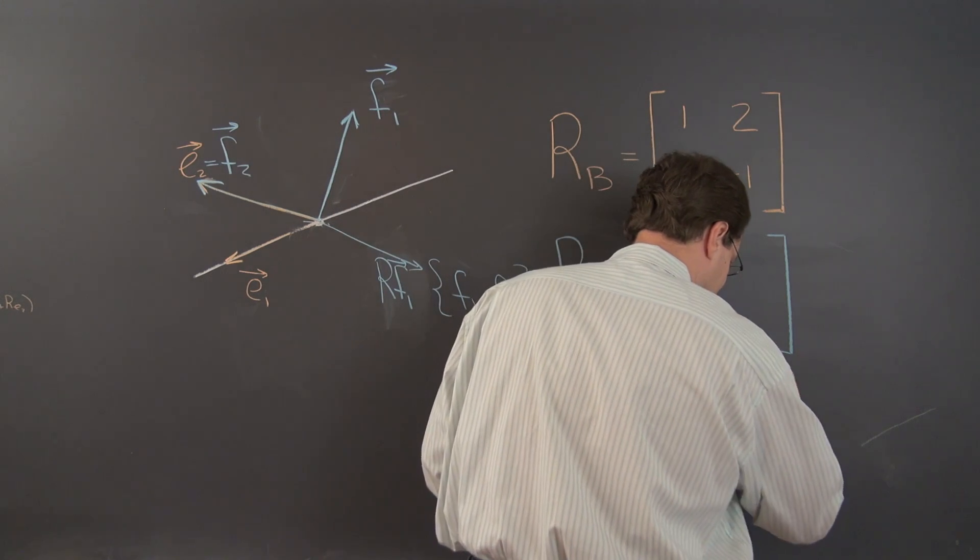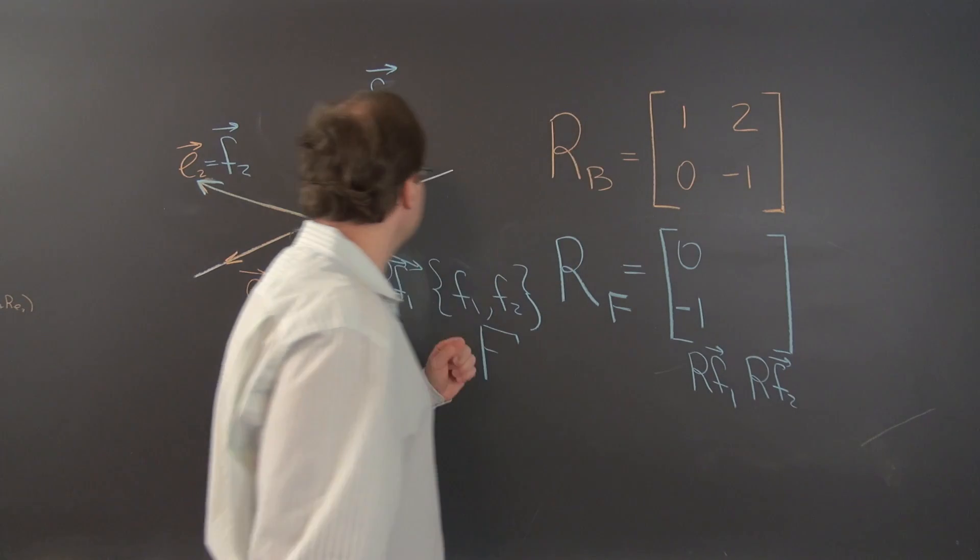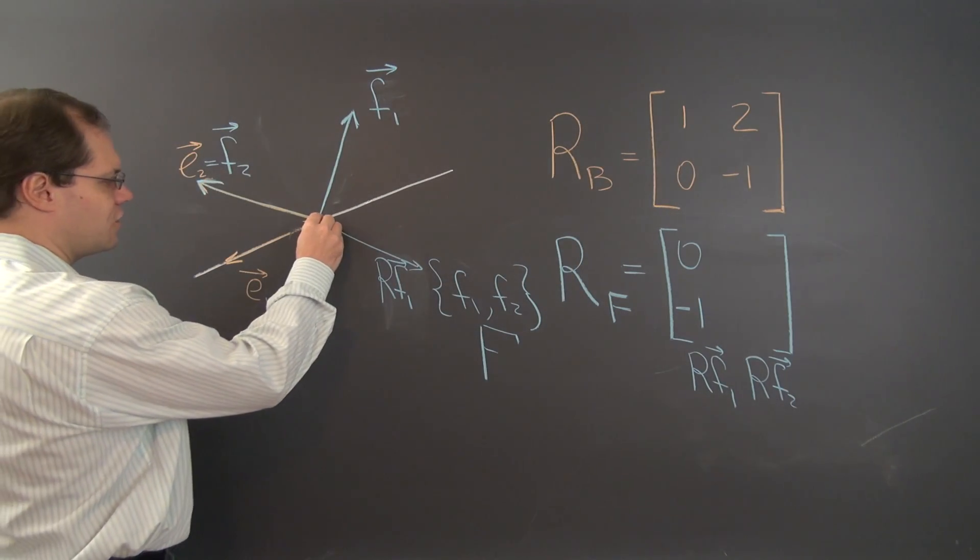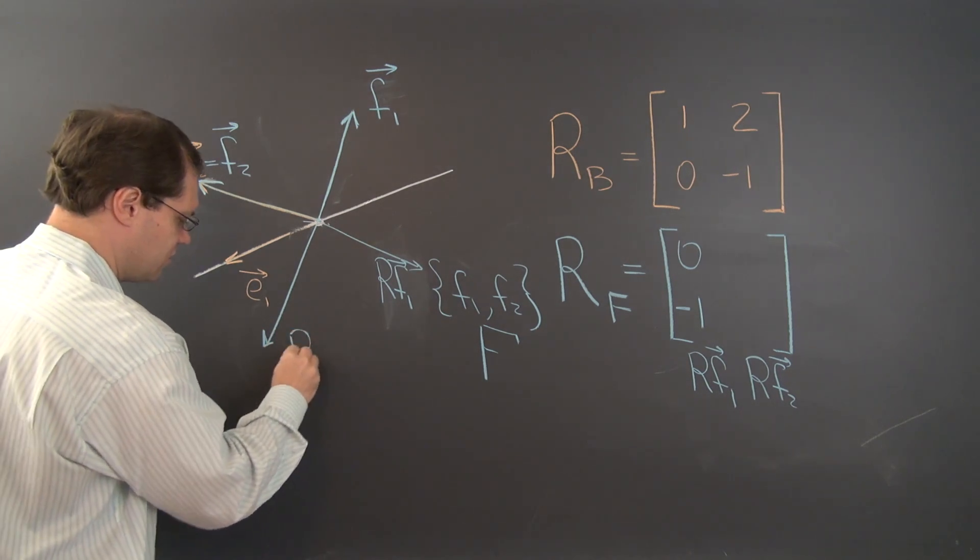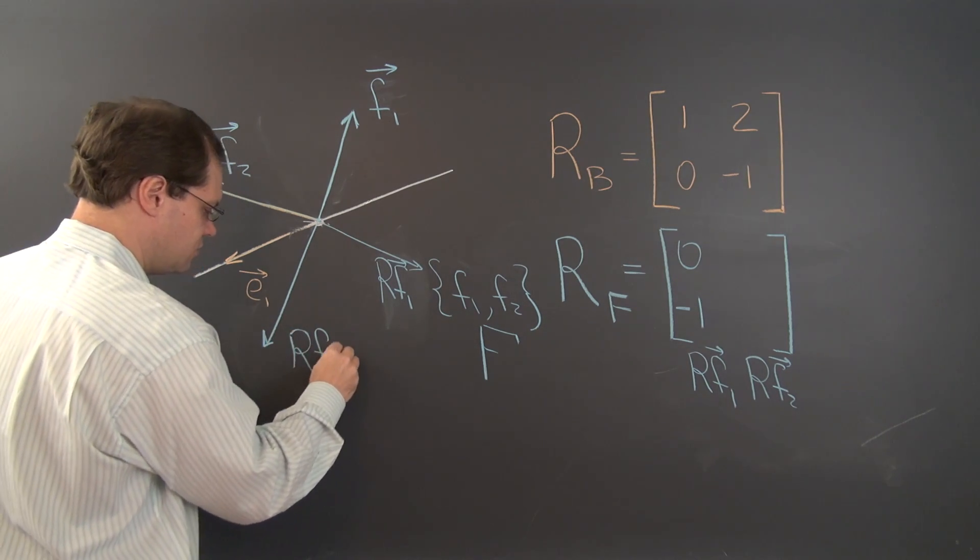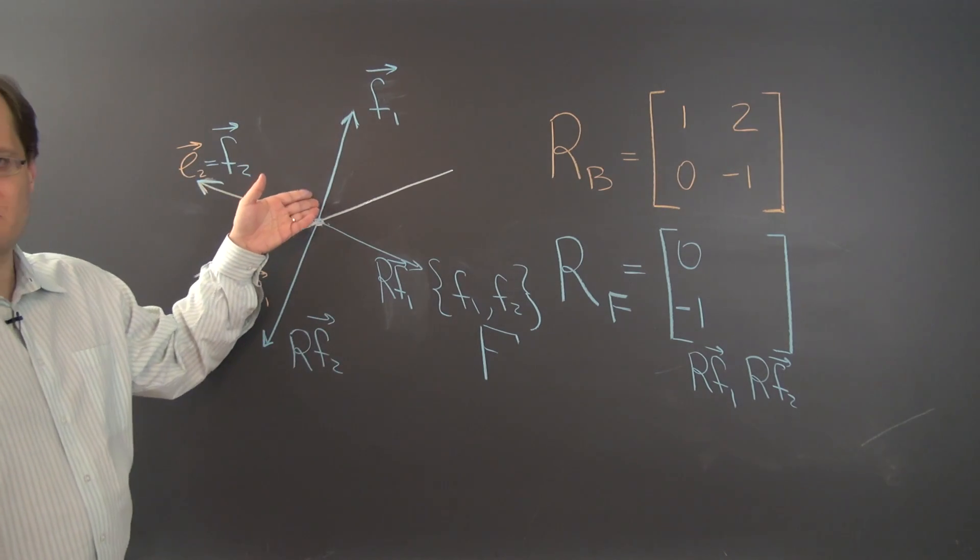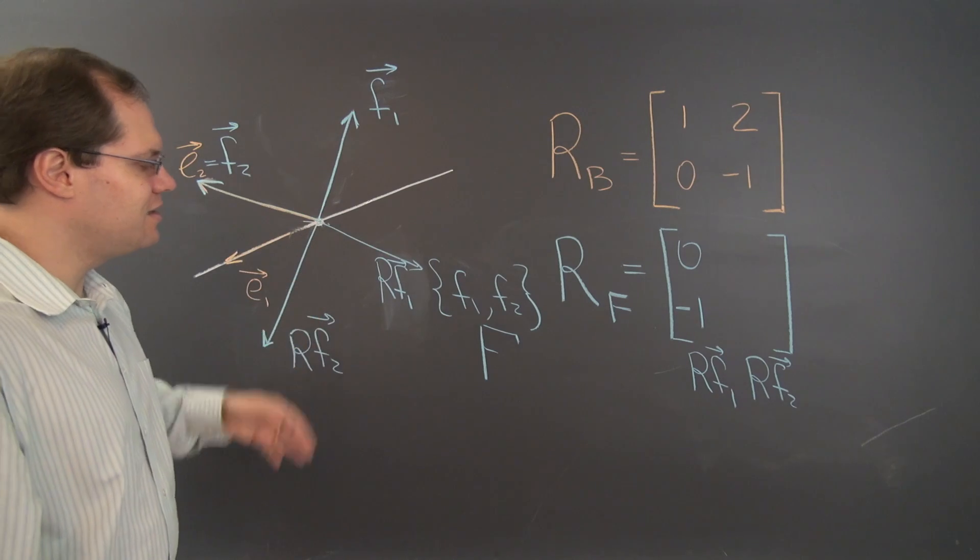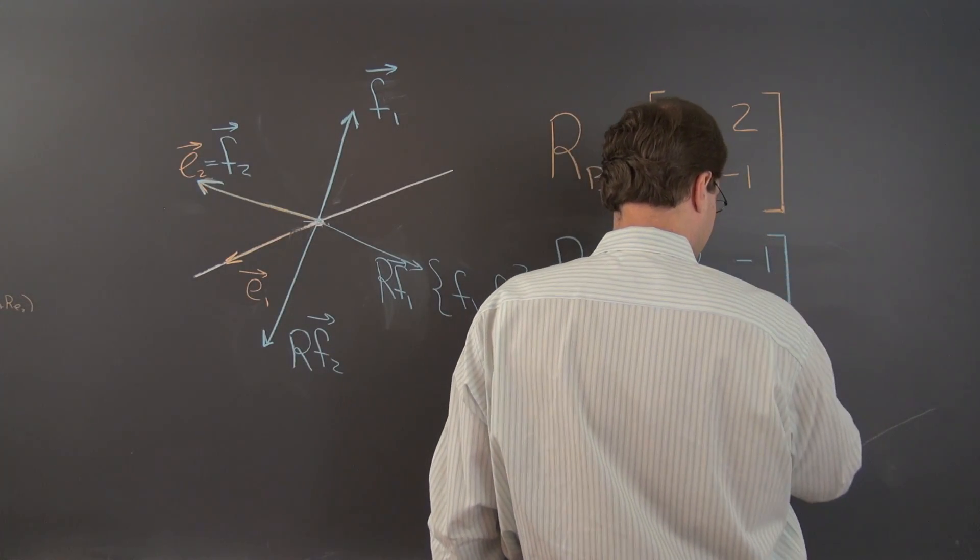Now let's construct the second column, r of f2. So let's see what f2 is. r of f2 is this vector right here. This is r of f2 which of course equals minus f1, so minus f1, none of f2, so negative 1, 0.